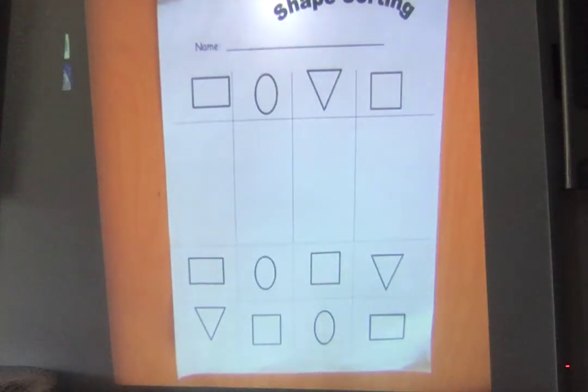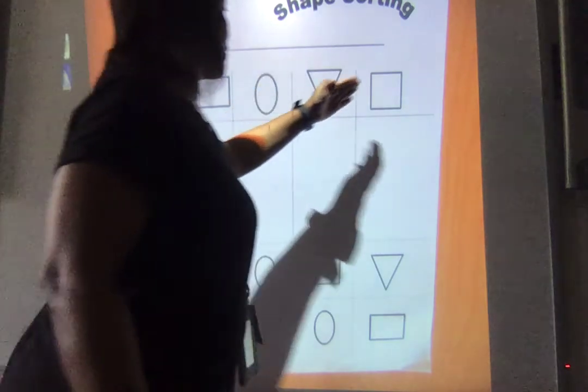When we sort, we separate. Okay? When we sort, we separate. So let's take a look. There's a rectangle, an oval, a triangle, and a square.